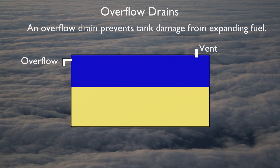One or more overflow drains will also be provided for the fuel system. They prevent fuel tank structural damage by allowing fuel to escape the tank overboard in the event pressure inside the tank becomes too great.